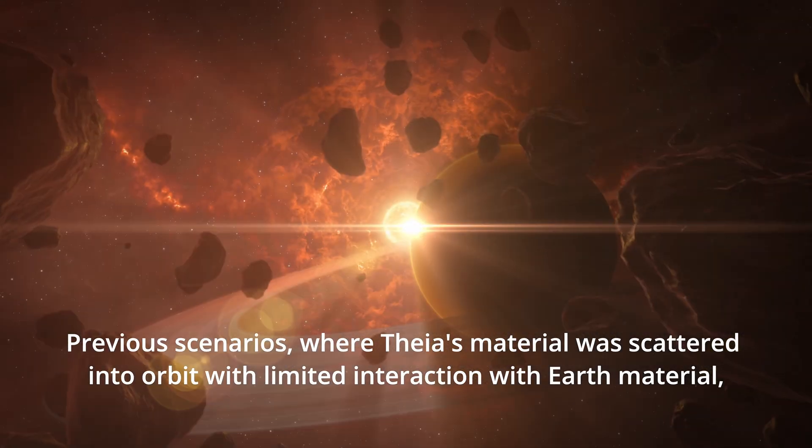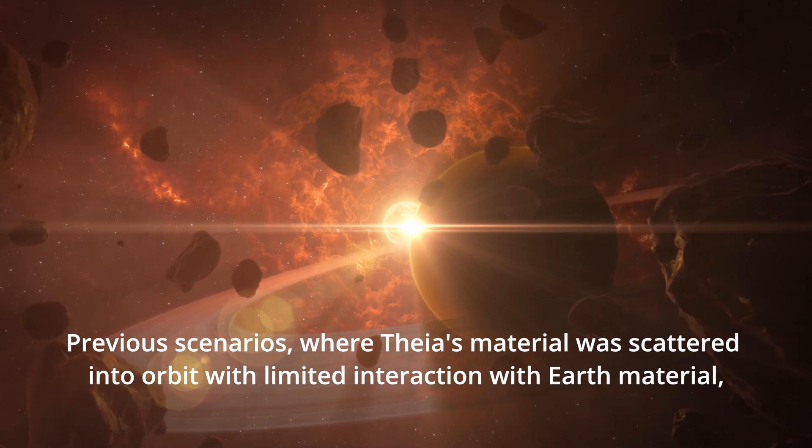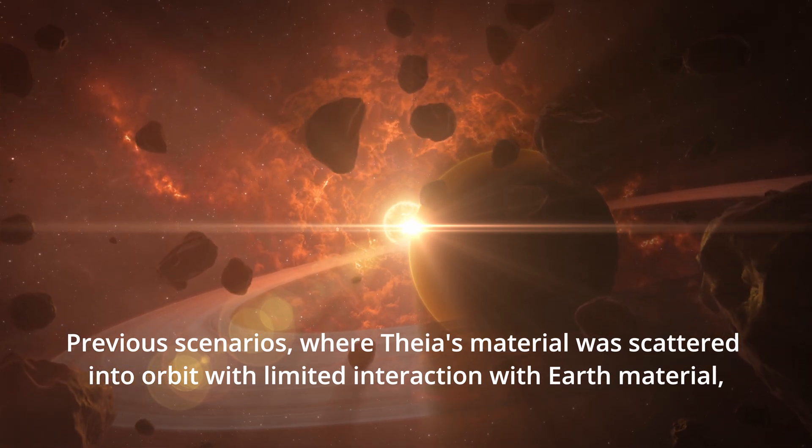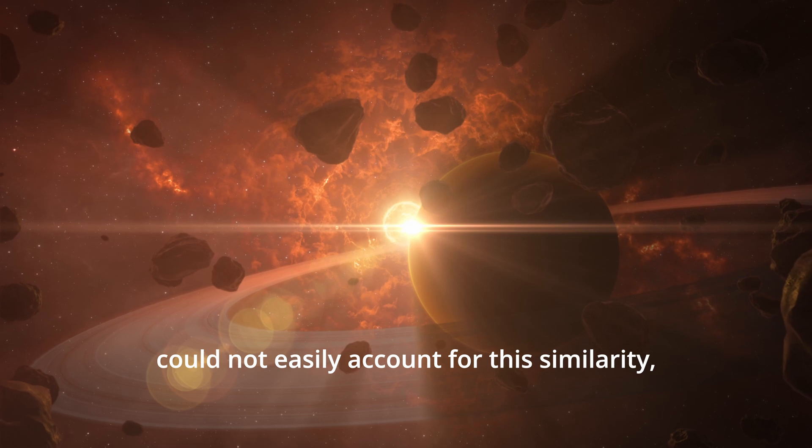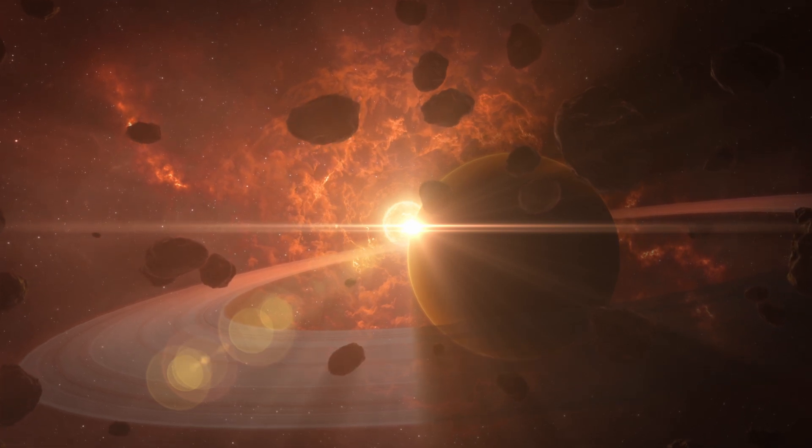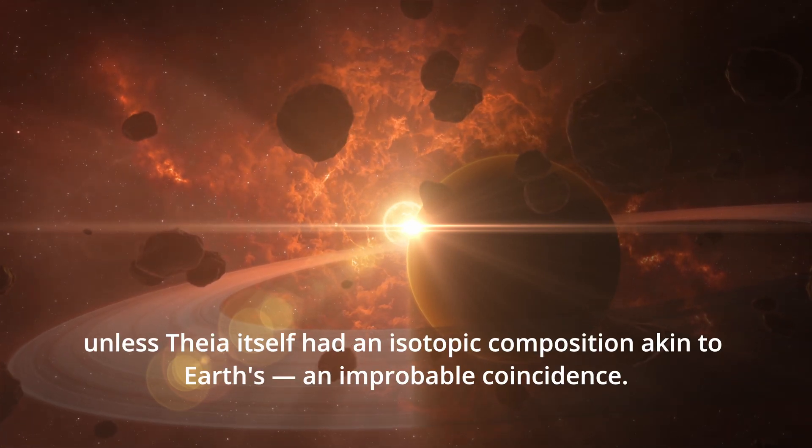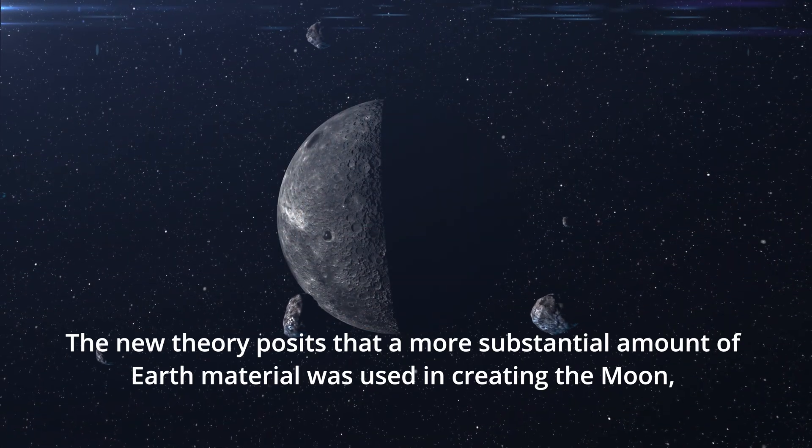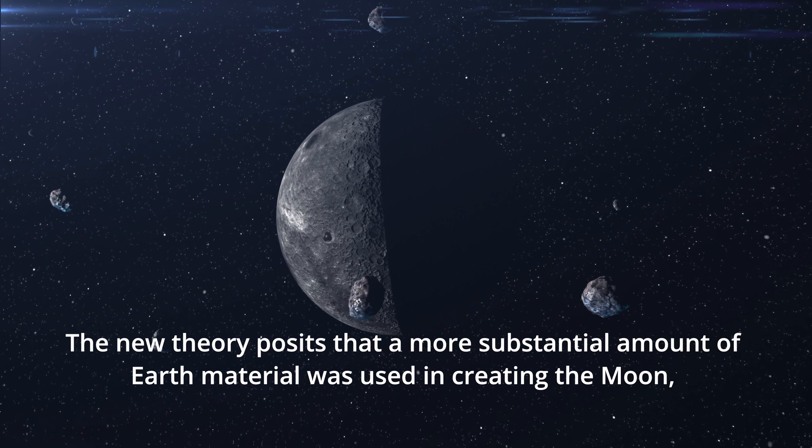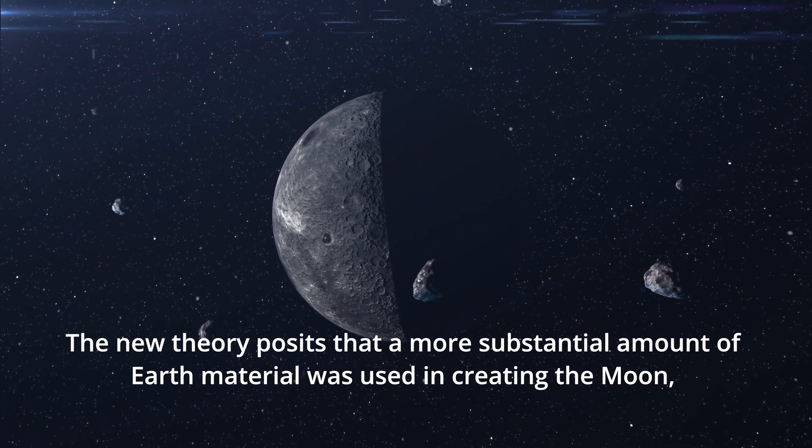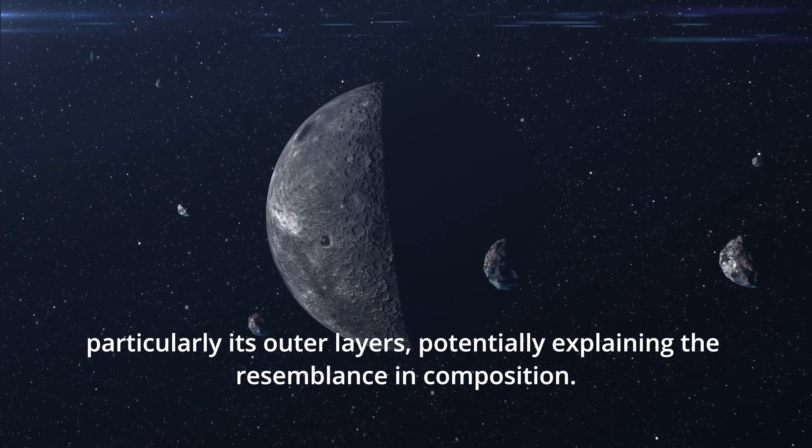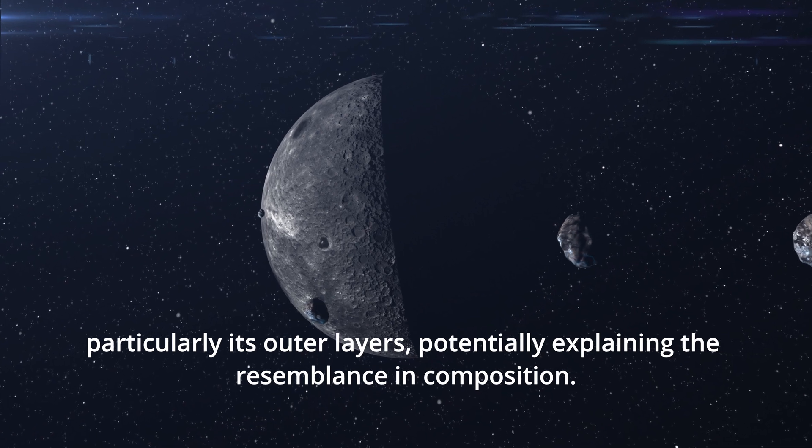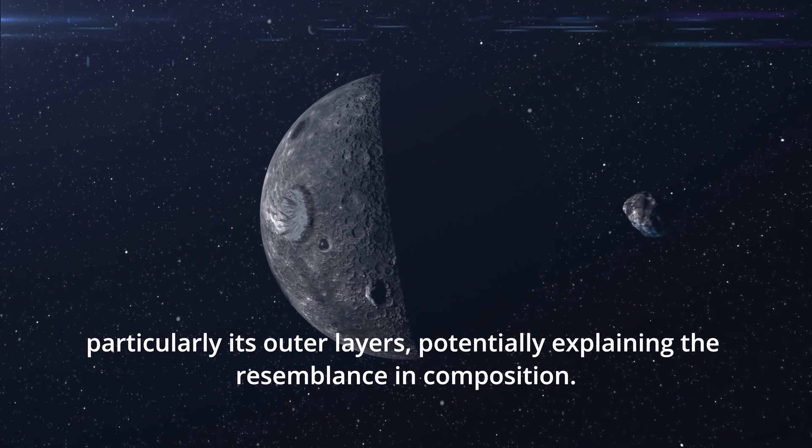Previous scenarios, where Theia's material was scattered into orbit with limited interaction with Earth material, could not easily account for this similarity, unless Theia itself had an isotopic composition akin to Earth's, an improbable coincidence. The new theory posits that a more substantial amount of Earth material was used in creating the Moon, particularly its outer layers, potentially explaining the resemblance in composition.